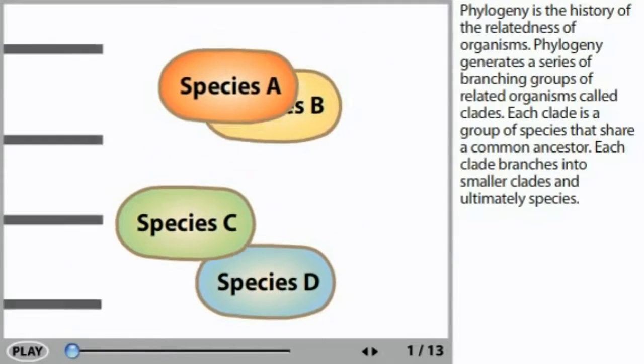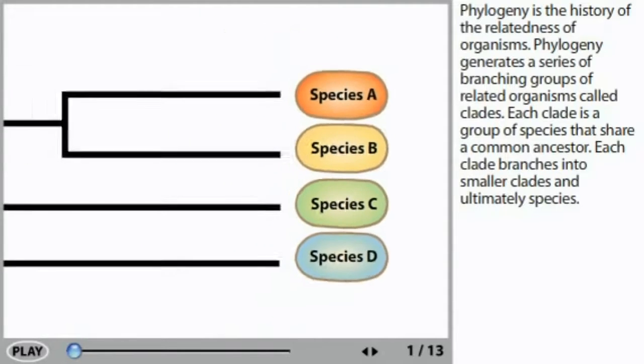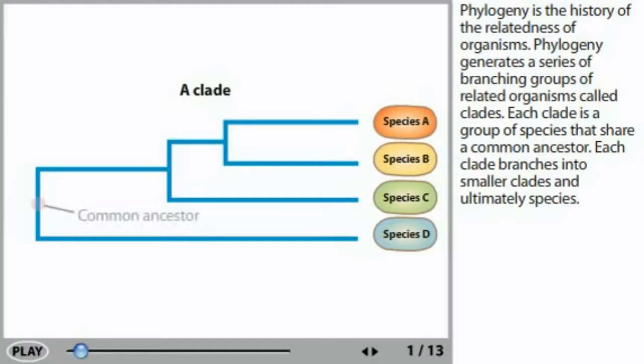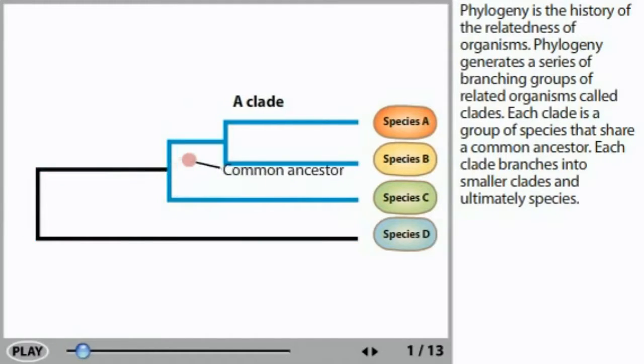Phylogeny is the history of the relatedness of organisms. Phylogeny generates a series of branching groups of related organisms called clades. Each clade is a group of species that share a common ancestor. Each clade branches into smaller clades and ultimately species.